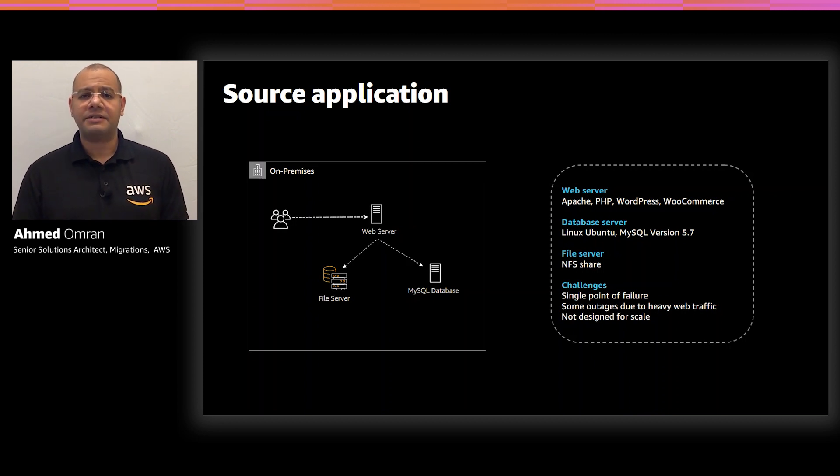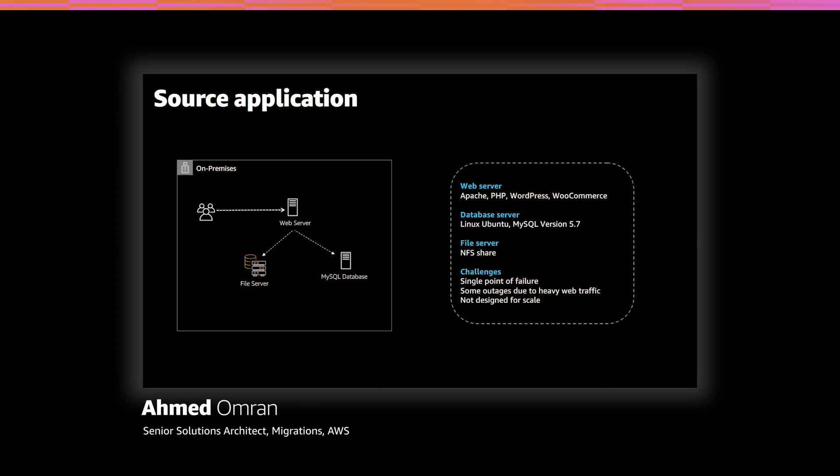As you can see, there is a single point of failure in this architecture. This application is not designed to scale and customers experience several outages due to heavy traffic. Our goal is to migrate this application to AWS and make it highly available and scalable. Before we start the migration, let's look at the different migration options for each component.